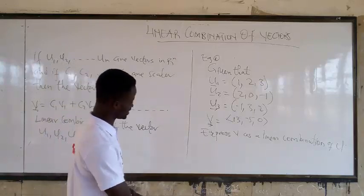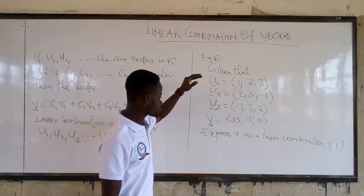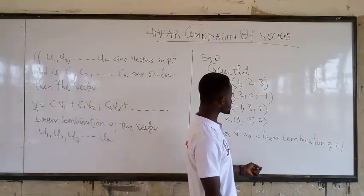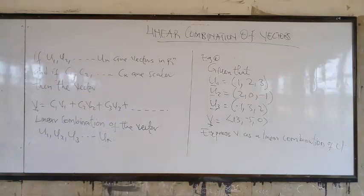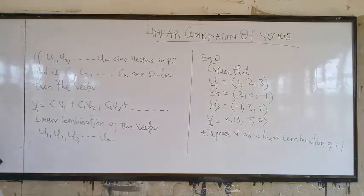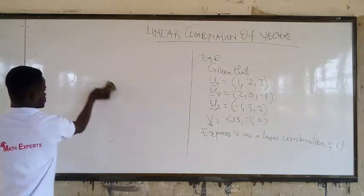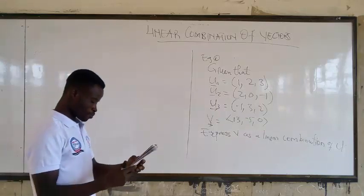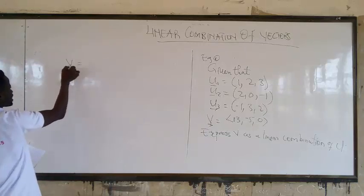Linear combination, that's all. It's about scalar multiples of vectors. Alright, so now let's do that. Given that, express V as a linear combination of U. The same thing.